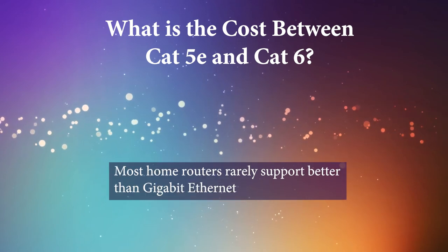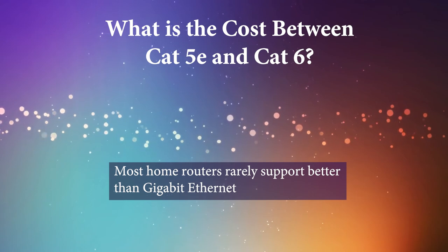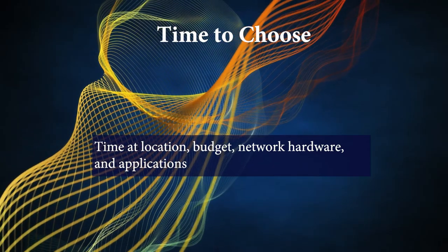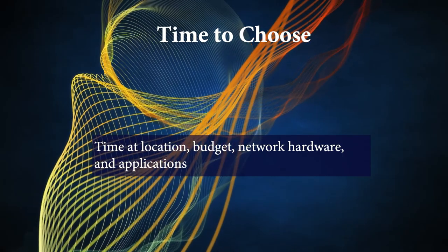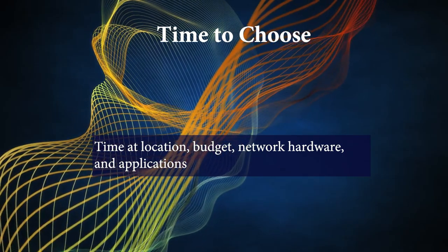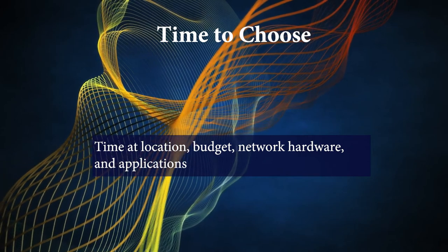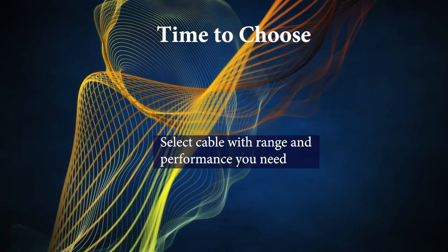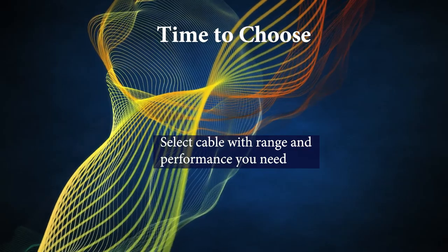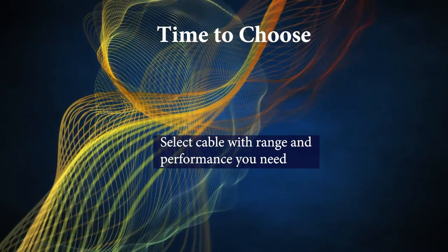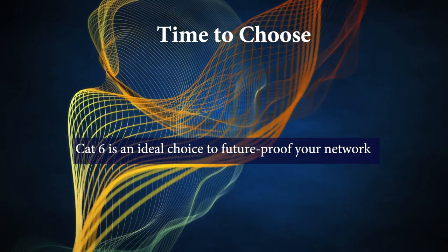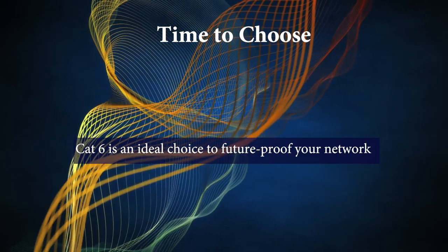Most home routers in the retail market rarely support better than Gigabit Ethernet. The choice of which cable to select narrows down to how long you will be at your current home or building, your budget, current network hardware, and your requirements. The easiest way to choose a cable is to select the cable rated to the range and performance you will need. Choose a higher rated Cat 6 or Cat 6A cable to future-proof your network if you are not under budget constraints.